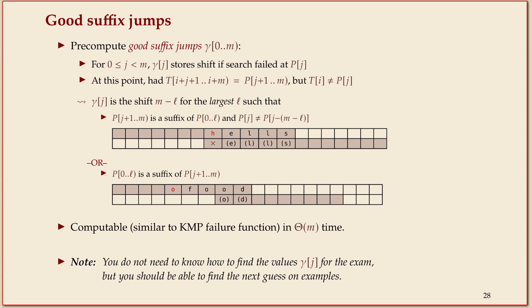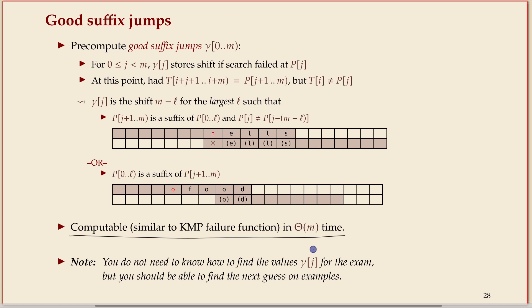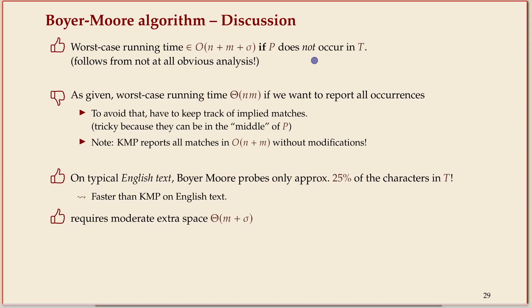You may wonder how to efficiently compute these shifts. This is one of the cases where something like the failure function of the KMP algorithm allows you to compute these shifts in linear time. The algorithm is a little tricky — not long code, but it's finicky with lots of index arithmetic. Note that this entire section is not part of the exam.